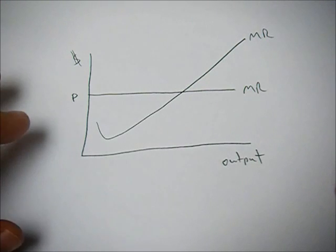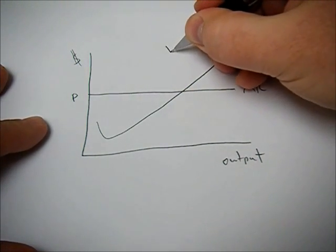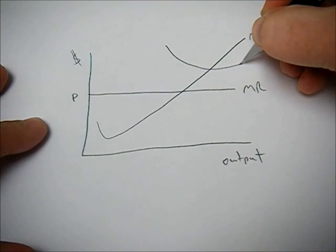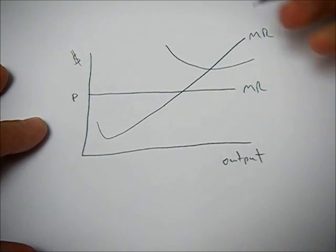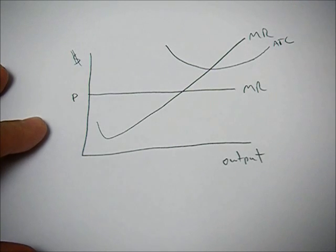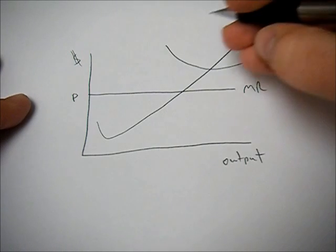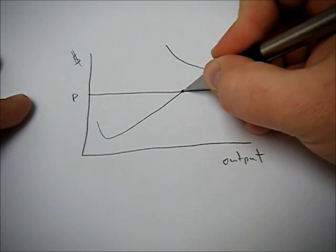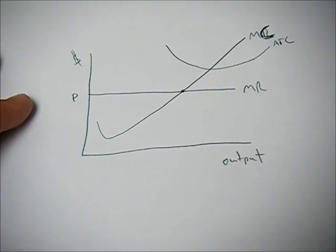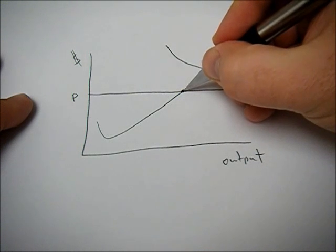Okay, what if we're no longer in long run equilibrium? And let's say that our average total cost is higher than it was before. So we're still going to produce where marginal revenue equals marginal cost for the reason I talked about before.